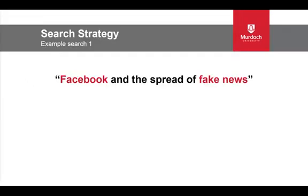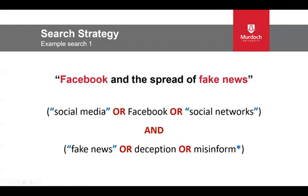Here is a sample search strategy for the topic: Facebook and the spread of fake news. For Facebook, you can use that term but also think of synonyms — "social media" in quotation marks will search that as a phrase, and also "social networks". These are joined using the Boolean operator OR because any of those terms are acceptable. Then combine and narrow using AND. Synonyms for fake news could be deception or misinformation — truncating misinformation* will pick up misinformed and misinformation. If the question asked about the ethical dilemma of fake news, you could add ethic* to search within the results.